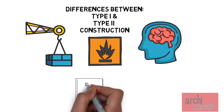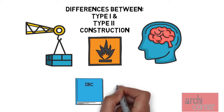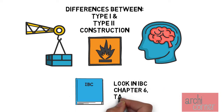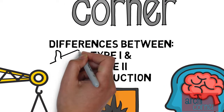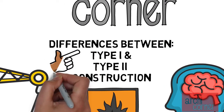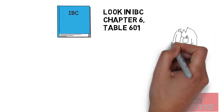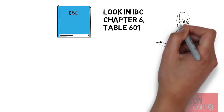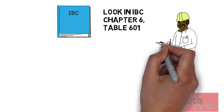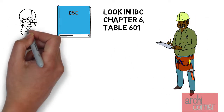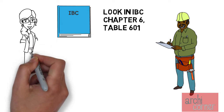There is a table at the beginning of IBC chapter 6 that provides you with information for all building types in this regard. But the question was: what is the difference between type 1 and type 2 construction? Well, let's start by figuring out what type of materials we can use. IBC chapter 6 is the chapter that details type of construction.